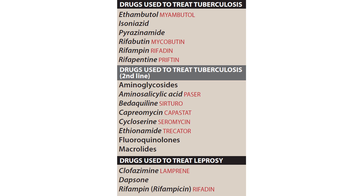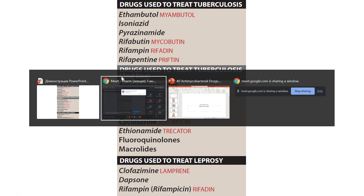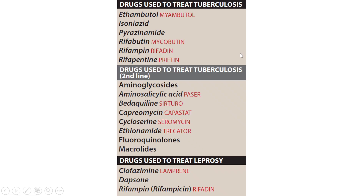Leprosy is not common in Russia — it is mostly an African disease. For the treatment of tuberculosis, there are two types of drugs. First-line drugs include isoniazid, ethambutol, pyrazinamide, and one of the antibiotics: rifampin, rifabutin, or rifapentine. Usually a combination of four of these drugs is used.